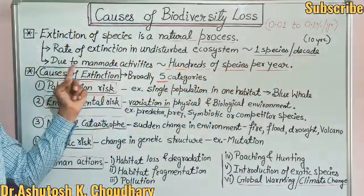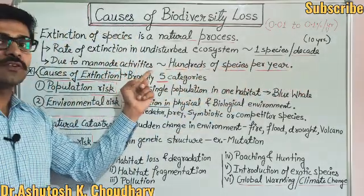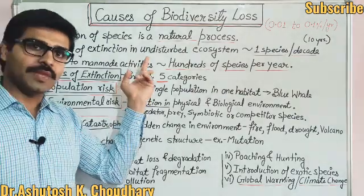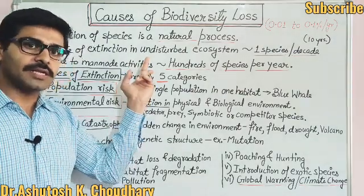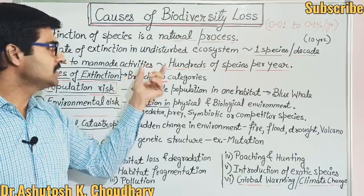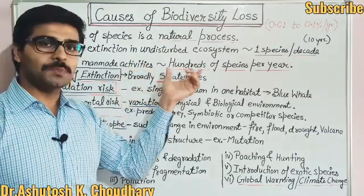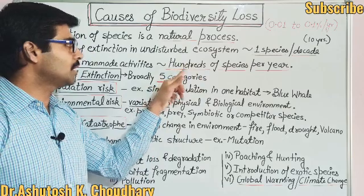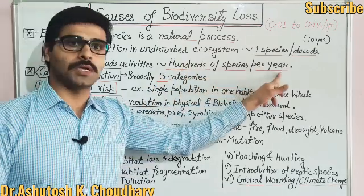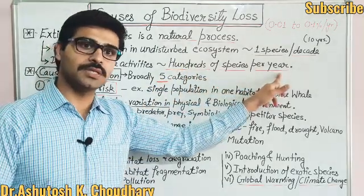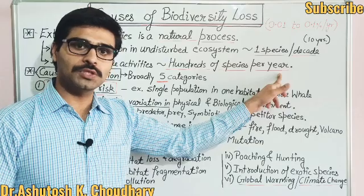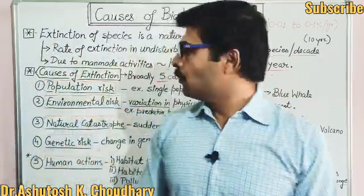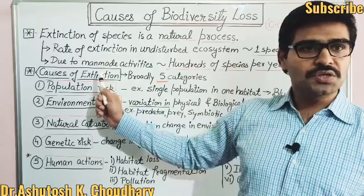But on the other hand, due to manmade activities — pollution, habitat degradation, agricultural activity, developmental activities — the extinction rate is very high and may be up to hundreds of species per year. Remember this: hundreds or more than hundreds of species per year.